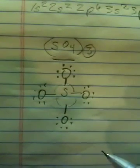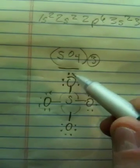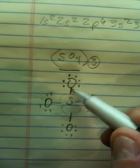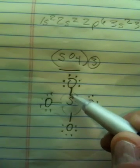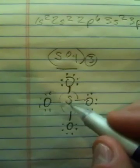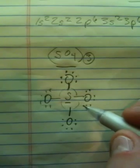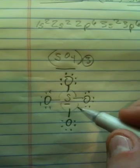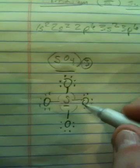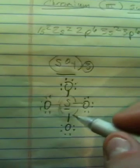Now we have one, two, three, four, five, six, seven, eight electrons there. But there's a problem, because sulfur likes to have six electrons around it — or it has six valence electrons available.